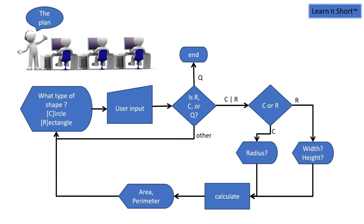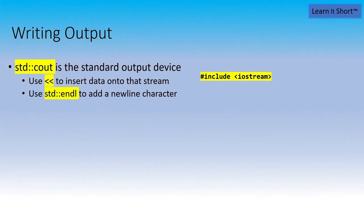So the first thing we need to know how to do is write output. Now you learned about this last week in last week's session. Remember that C out or standard C out is our standard output device. And we use the insertion operator, the two less than symbols to insert data onto that stream. And we can insert a large variety of different data types onto that stream. Floats, doubles, characters, strings, integers, a lot of different things can be streamed to an output stream. We can also use one of the special manipulators called endl to add a new line character to the stream anywhere we wish. Endl and C out are both defined in the header file iostream. So we need to include that at the top of our source file.